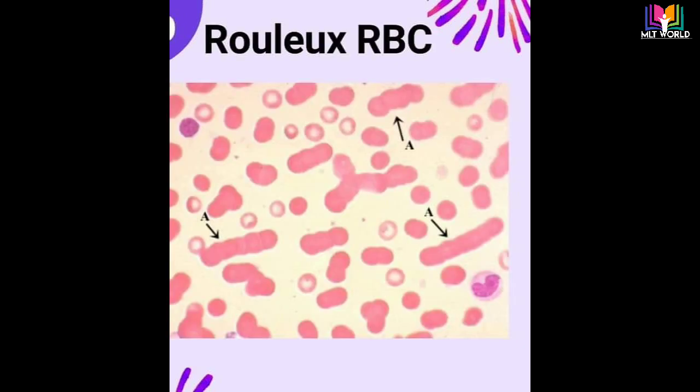Next is rouleaux RBC. Rouleaux are stacks or aggregations of red cells that form because of the unique discoid shape of the cells. What causes rouleaux: when rouleaux formation is truly present, it is caused by an increase in certain proteins such as immunoglobulins and fibrinogen. To confirm rouleaux formation, it is better to try one more smear to confirm, because sometimes if the smear is not made properly, rouleaux formation can appear as an artifact.